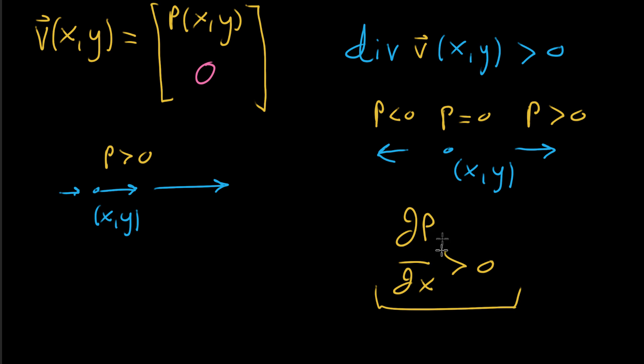So once again, we have this idea of positive partial derivative of p with respect to x, because changes in x, as you increase x, it causes an increase in p, seems to correspond to positive divergence.